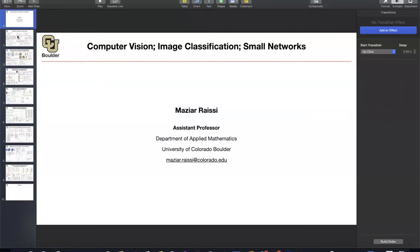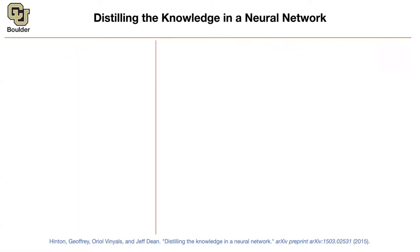Let's get started with the first set of ideas. The idea is that you have a large neural network, or an ensemble of neural networks, giving you very high accuracy. You train them and during training you can take as much time and resources as you want. Now you want to take that knowledge that your giant neural network acquired through training and distill it — this is different from transferring knowledge. You're distilling the knowledge into a smaller neural network.